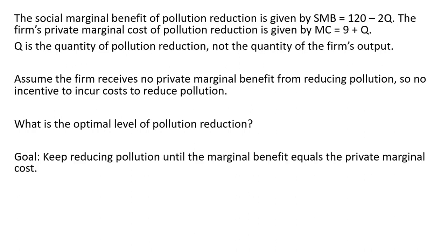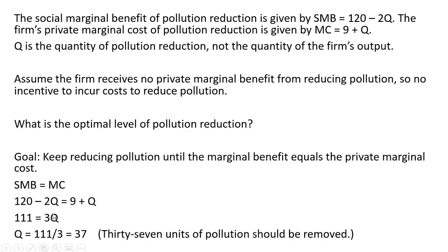The goal is to keep reducing pollution until the marginal benefit equals the private marginal cost. So we're going to set these two equations equal to one another: social marginal benefit equals marginal cost, and solve for Q — adding 2Q to both sides, subtracting 9 from 120, and dividing through by 3. We get an answer of 37. So 37 units of pollution should be removed — that is what is optimal.